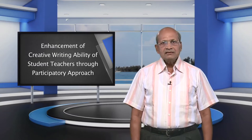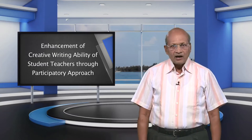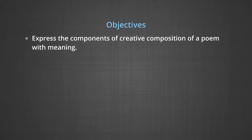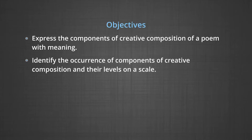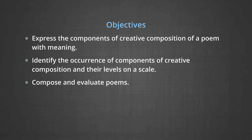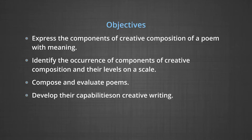Let us delineate the objectives. After going through this module, the learners will be able to express the components of creative composition of a poem with meaning, identify the occurrence of components of creative composition and their levels on a scale, and compose and evaluate poems and develop their capabilities on creative writing.